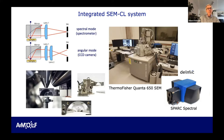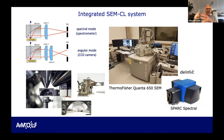The electron beam scans over the surface to take the SE image, and at the same time you also make an optical image. This is a parabolic mirror about a centimeter in height, placed between the pole pieces and the sample. You can see the little hole in the back — that's where the electron beam goes through. The whole thing is put on a piezoelectric stage, and that's where the nanophotonics comes in — now we're able to focus the electron beam and light collection optics at an extremely small length scale, imaging nanoscale structures made in our cleanroom.